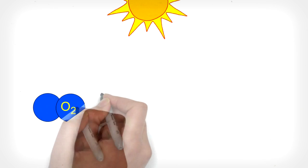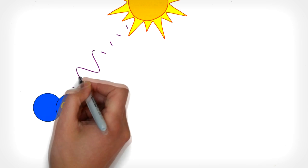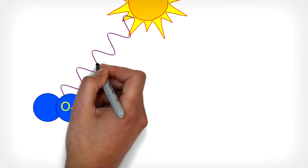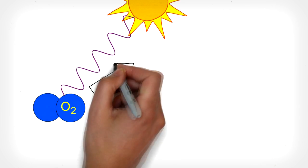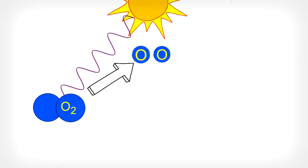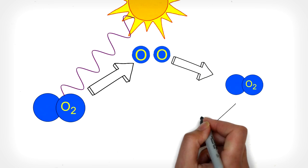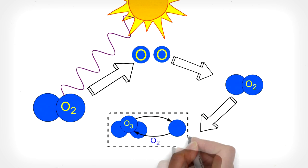Ozone is made when ultraviolet light from the sun splits an oxygen molecule, forming two single oxygen atoms. If one of the freed atoms collides with an oxygen molecule, it becomes ozone.